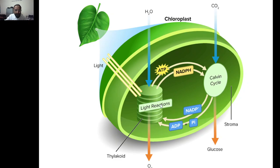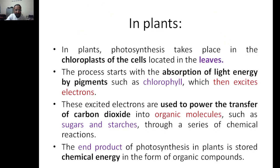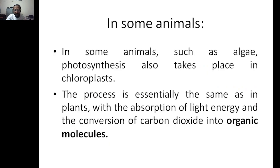In the diagram: the light-dependent reaction breaks water molecules, and the electrons produced are given to the Calvin cycle. The carbon dioxide is then converted into glucose or organic molecules like sugars. The end product of photosynthesis in plants is chemical energy stored in the form of organic compounds.